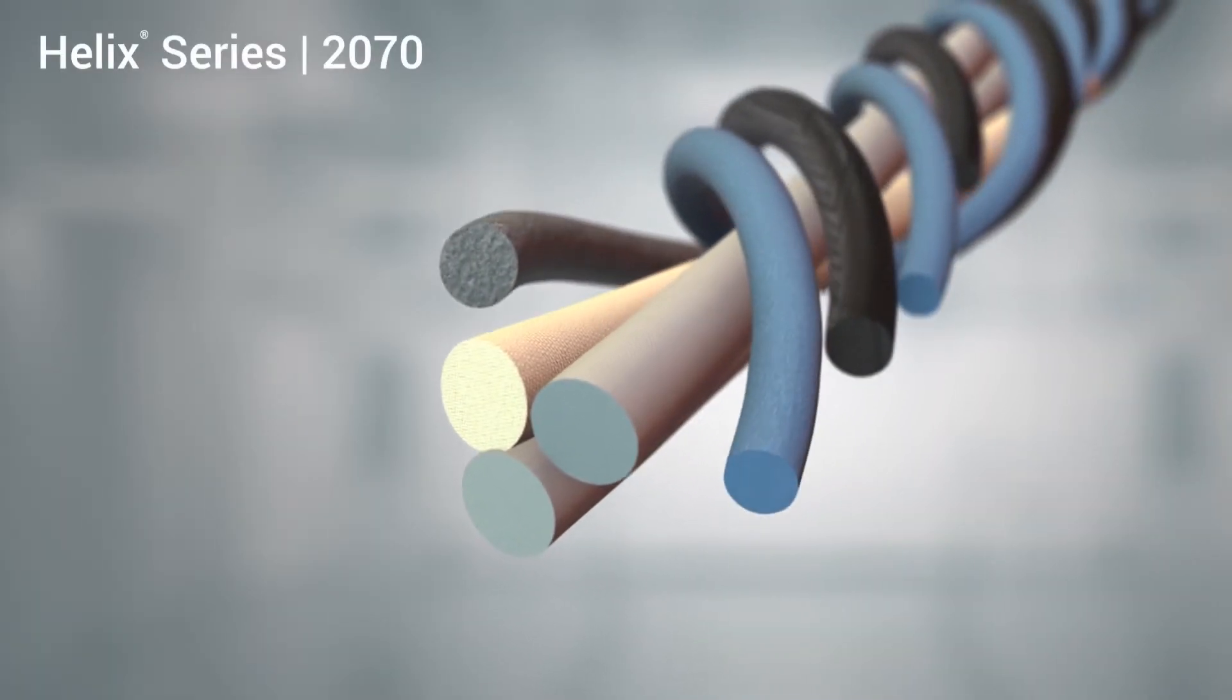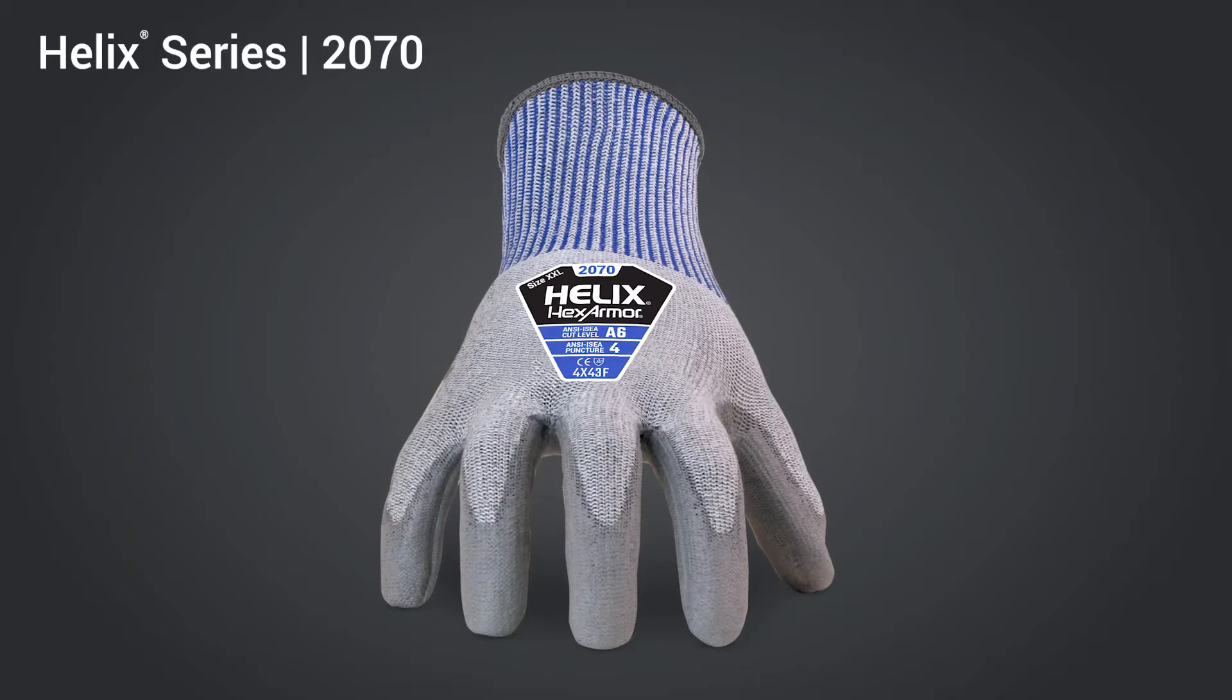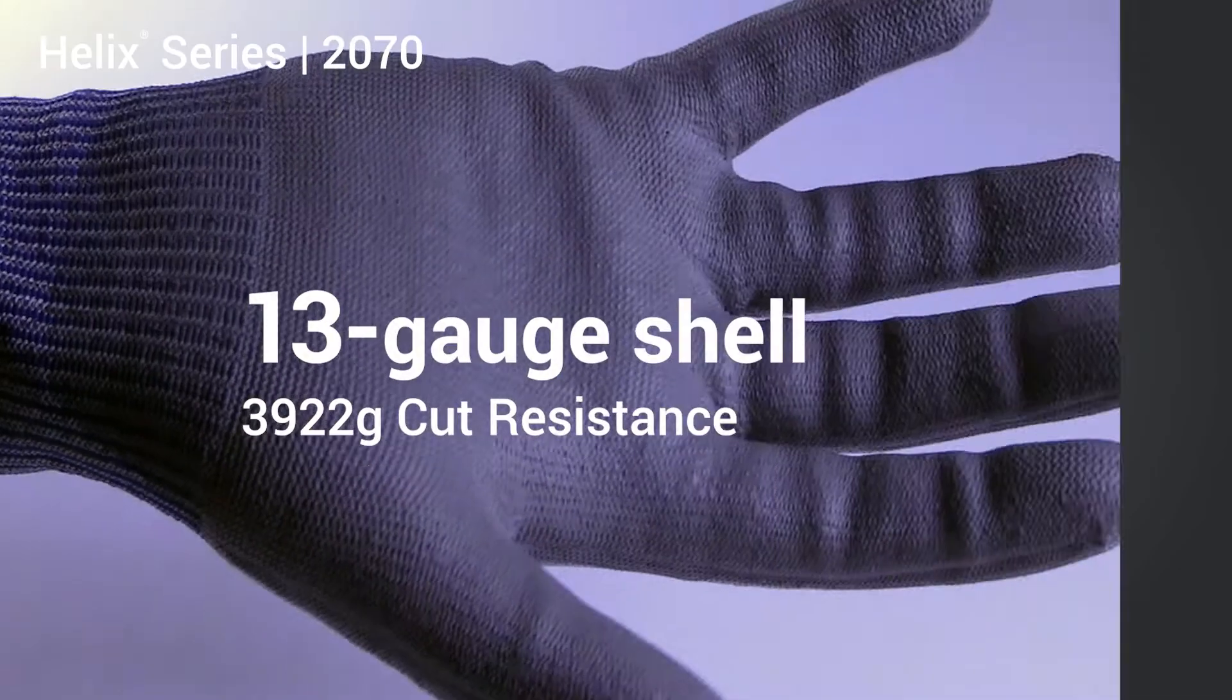a comfortable, highly flexible feel is made possible with the Helix 2070 and the innovative 13-gauge HPPE, fiberglass, and steel blend shell. Level A6 cut resistance feels incredibly adaptive and dextrous with this glove.